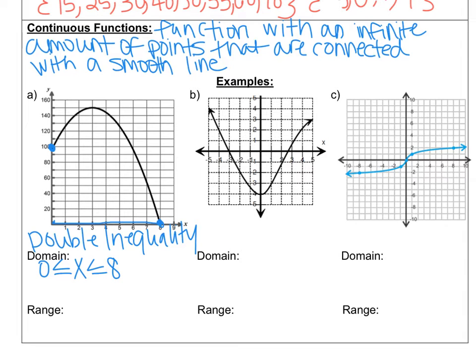I also want you to get in the habit of writing it not as an inequality, but as an interval. Remember that you bracket a closed circle and use a parenthesis for an open circle. Since these have exact points at 0 and 8, I could write it as [0, 8]. I'm going to draw a box around this function to give you a good visual of where the domain and range begins and ends on this graph.